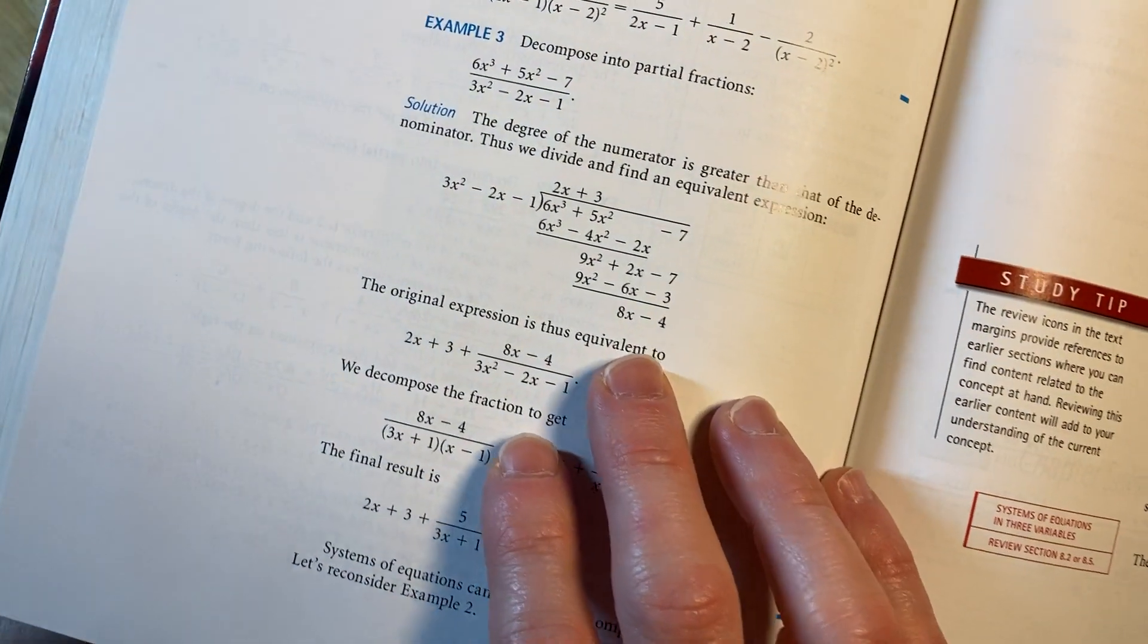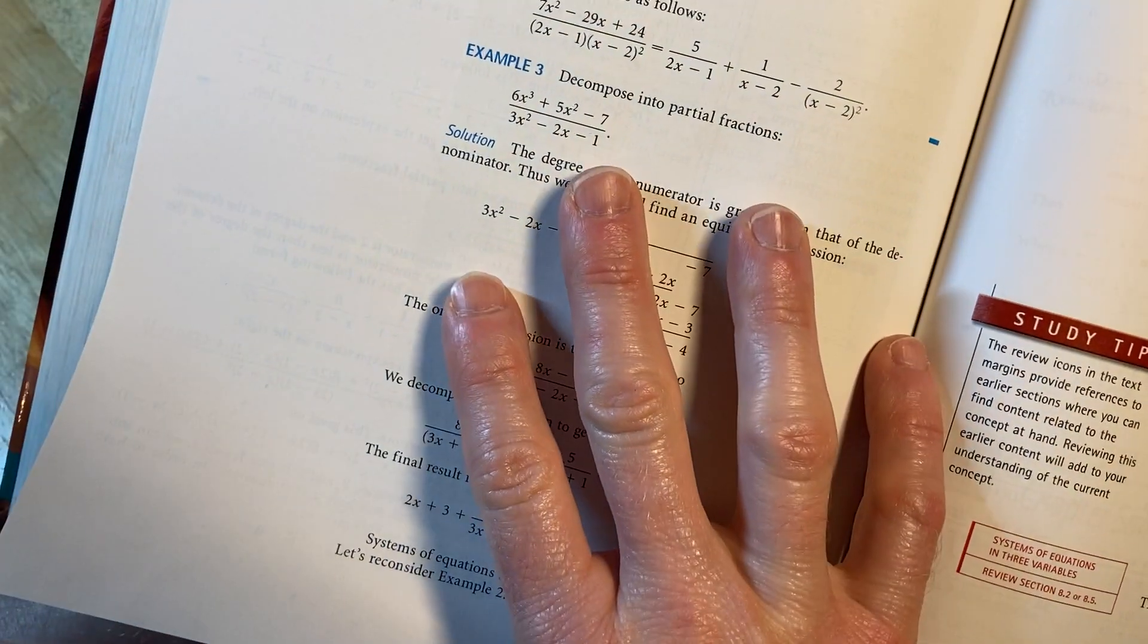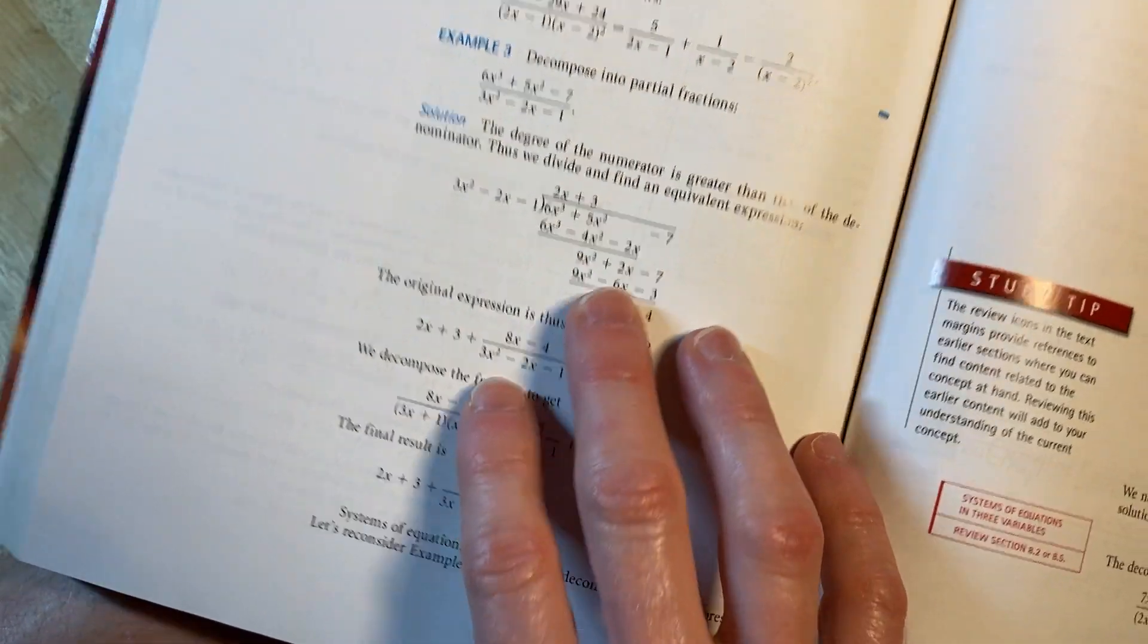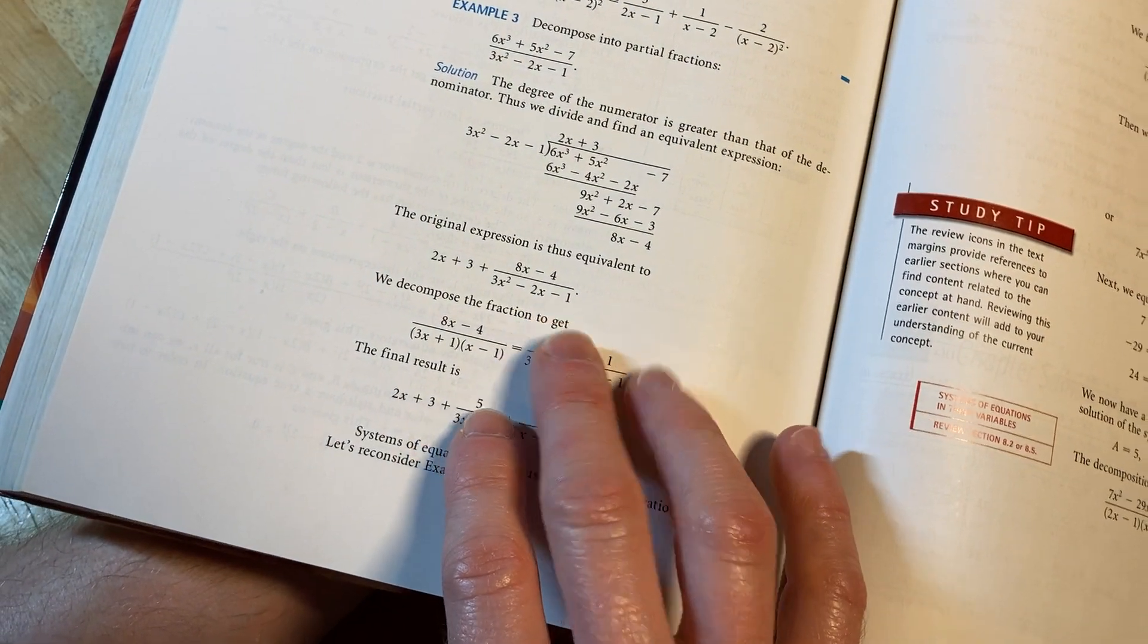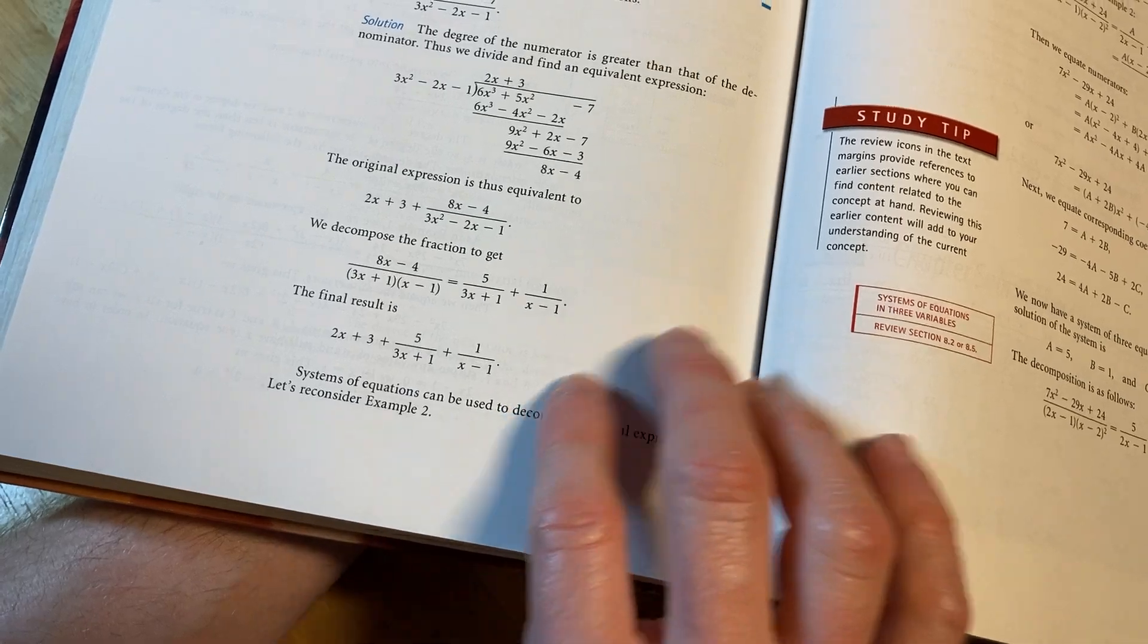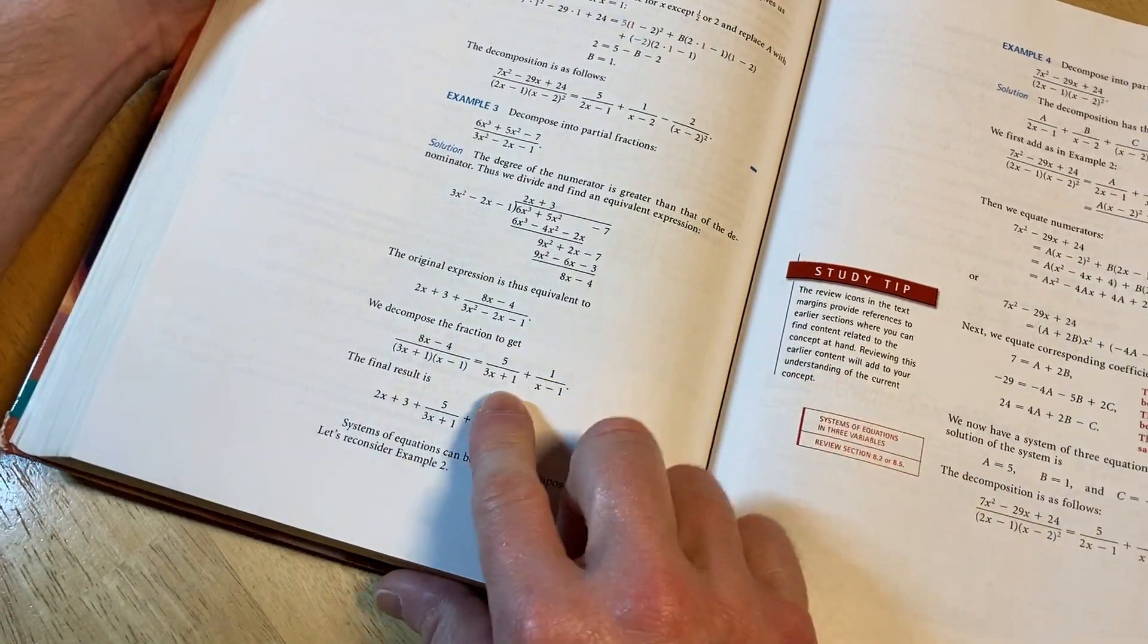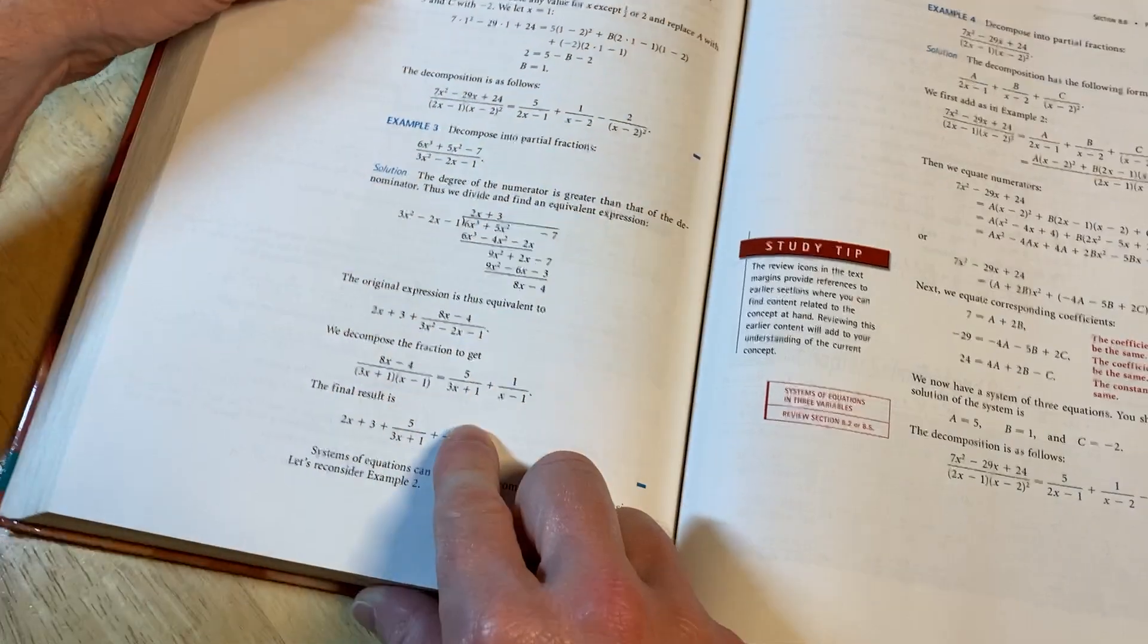And so what they're doing is they're first using long division because the degree in the numerator is higher than the degree in the denominator. So then you get here, and then you use partial fractions on this piece. They didn't really show the work, they just decomposed it.